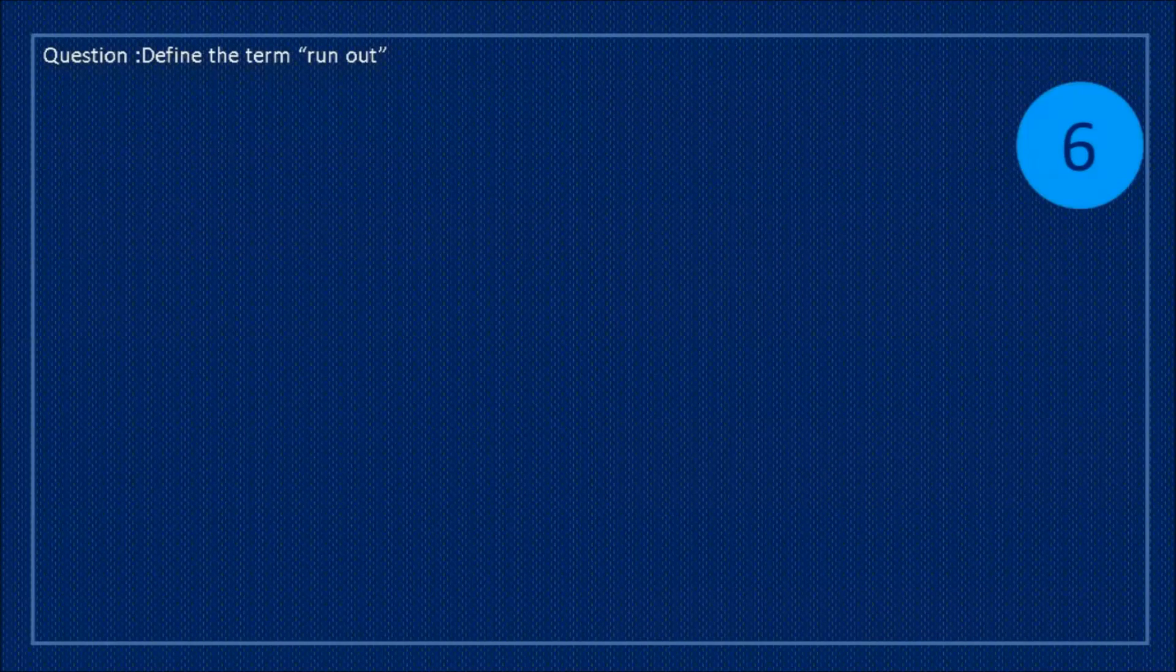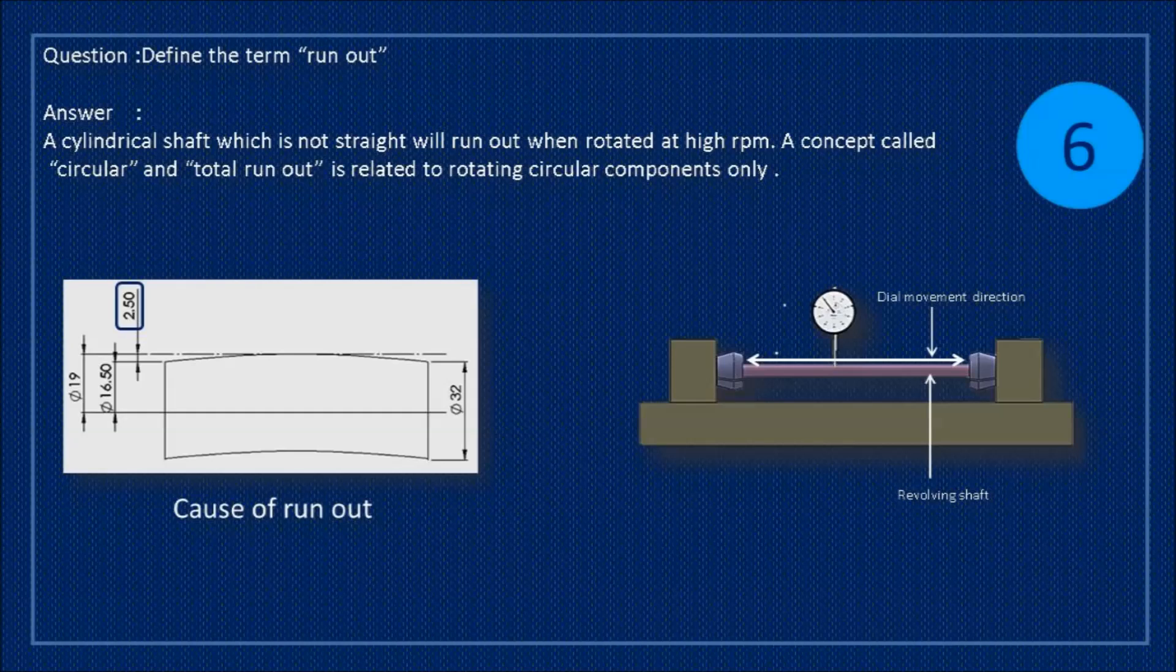Question: define the term run out. Answer: a cylindrical shaft which is not straight will run out when rotated at high RPM. A concept called circular and total run out is related to rotating circular components only.